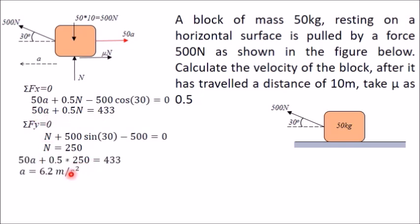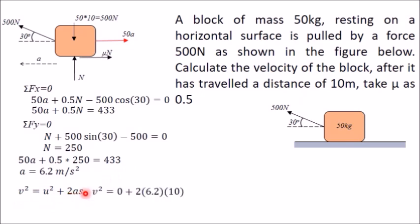Putting N = 250 Newton into the first equation, I calculated the value of A as 6.2 meters per second squared. Once you get this acceleration, apply the equation V squared equals U squared plus 2As. Initial velocity U is 0 since the block starts from rest. Acceleration A is 6.2 m/s², and distance S is 10 meters. So V squared equals 0 plus 2 into 6.2 into 10, giving V squared equal to 124, and therefore velocity V equals 11.1 meters per second. In this way, you can apply D'Alembert's principle to determine velocity or acceleration of a moving body.